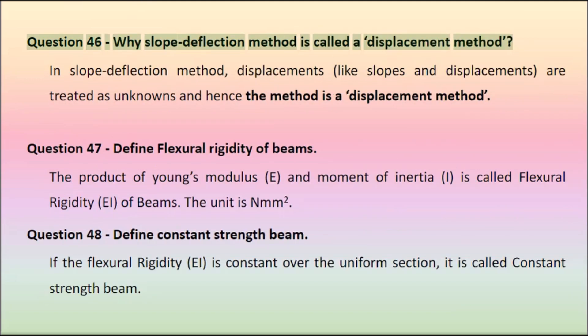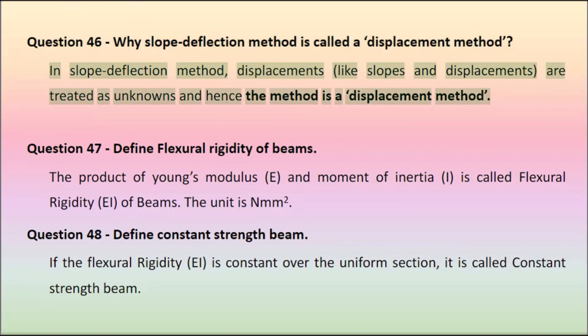Question 46: Why is slope deflection method called a displacement method? In slope deflection method, displacements — like slopes and displacements — are treated as unknowns, and hence the method is a displacement method.